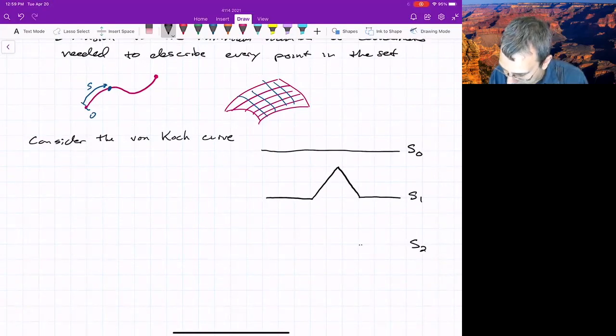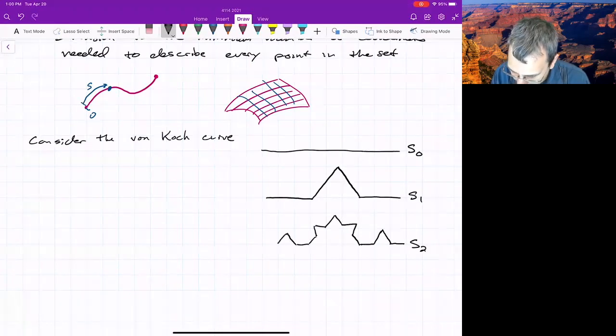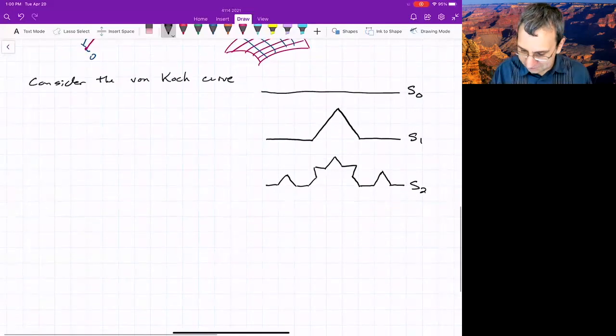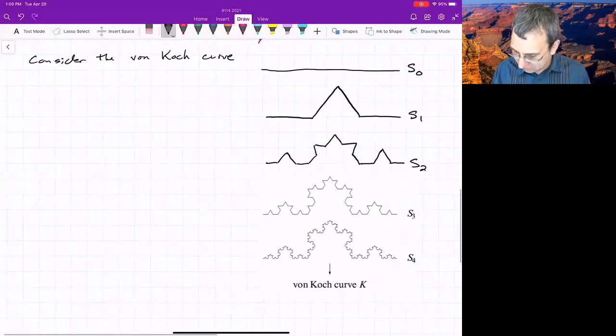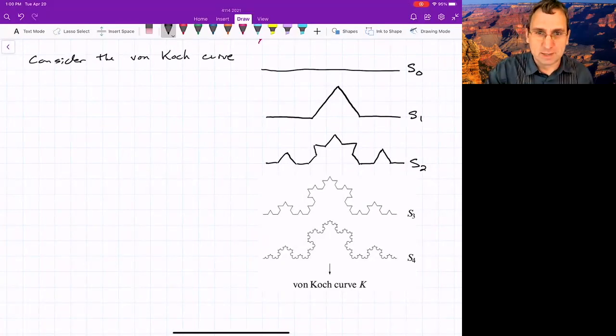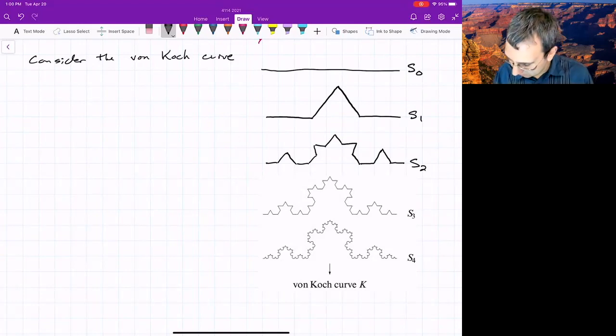So for each segment, we take the middle third, make an equilateral triangle. And it's kind of hard to do, but not impossible. You get it? And then if you keep doing this, so there's S3 and S4, right? You carry this out to infinity, and this would be S infinity, or you could call it the Koch curve.